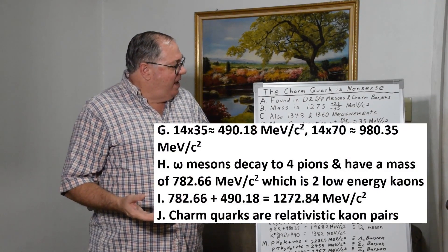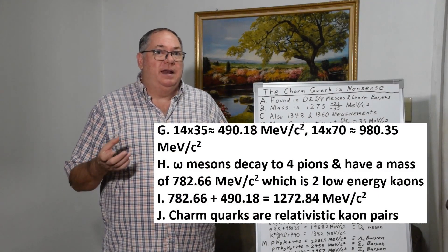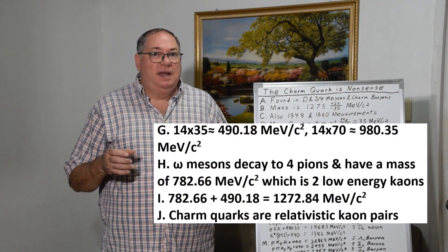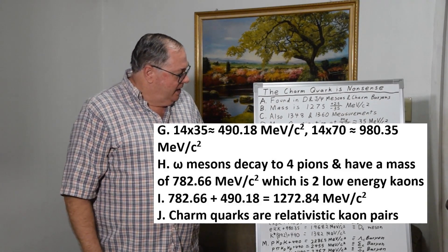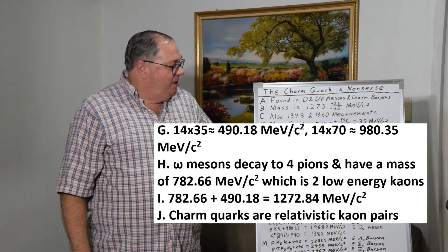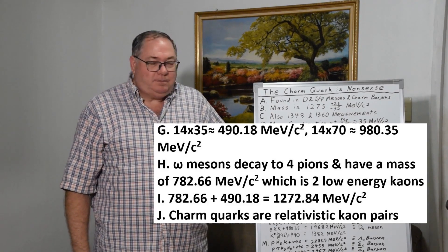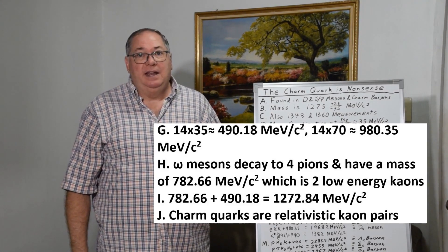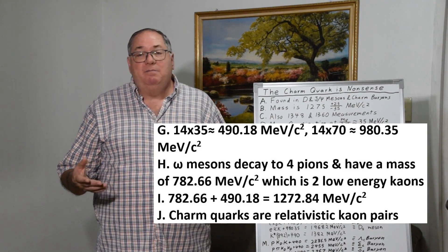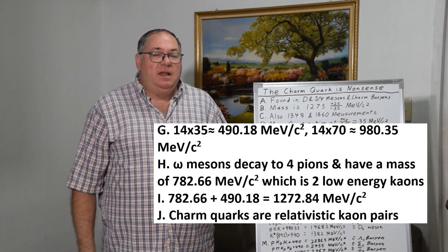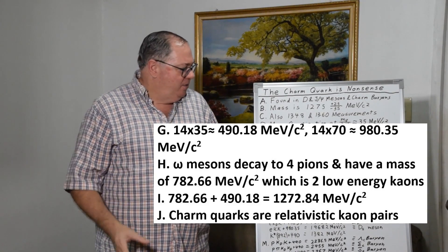And if you have a kaon made of two pions, each pion has three electrons and an electron orbiting, so they have seven together. So 14 times 35 is 490.18 MeV/c². And 14 times 70, further rounding off, is 980.35 MeV/c². So these are the orbital energies that are possible when you have two kaons in orbit.